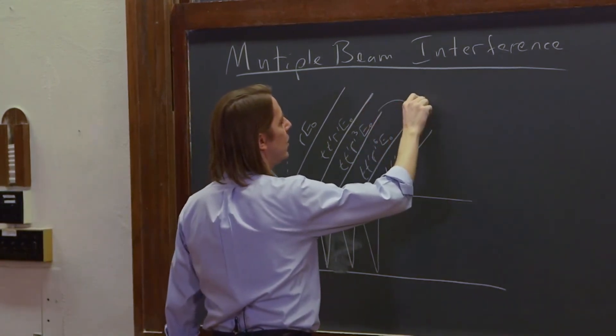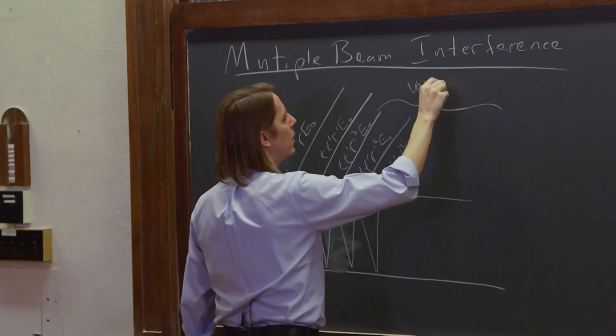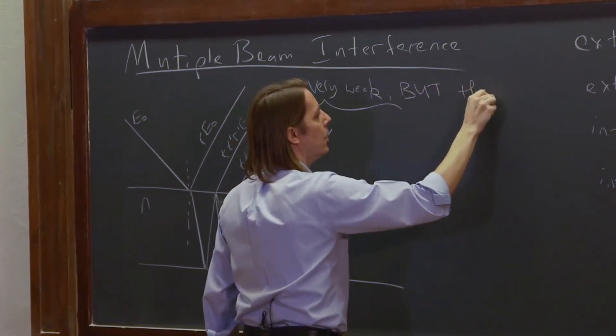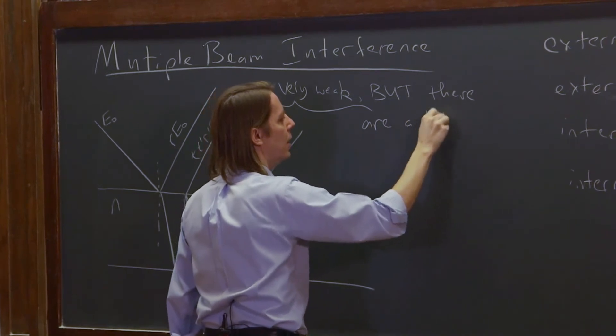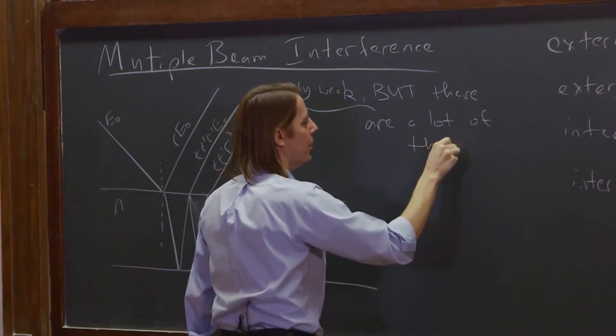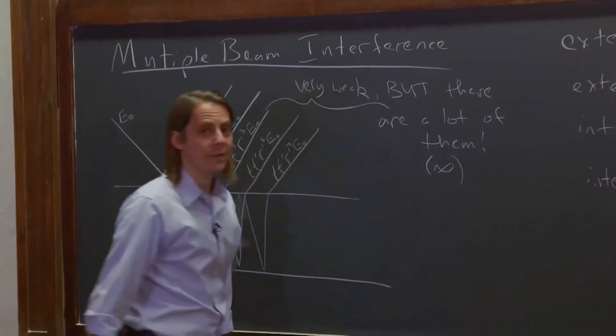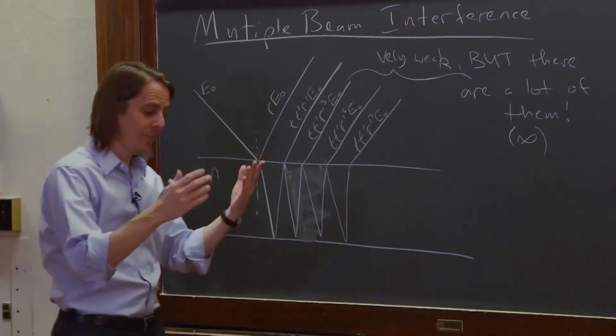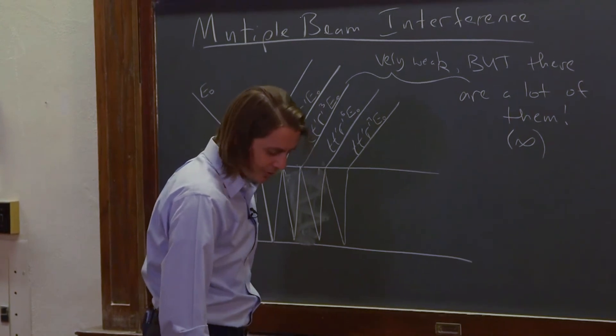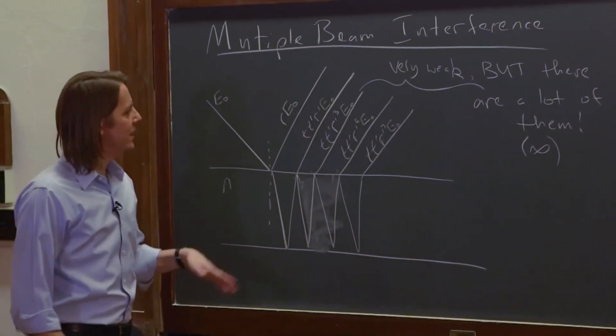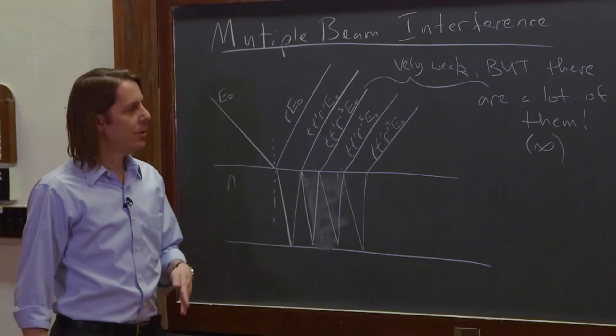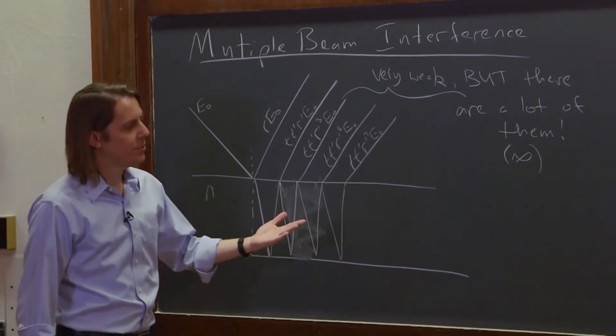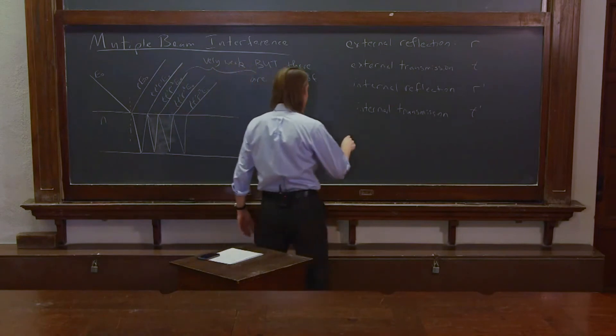So these are very weak. So we ignored them before, but there's a big but. There are a lot of them. Like infinity of them. Because they just keep going. So you have infinite terms. They're getting smaller and smaller. You know what that means. Sometimes it sums up to something significant. And sometimes it doesn't. So what we're going to do is actually keep up with all of them and add them together. But we also have to consider the fact that they could interfere. Maybe they'll interfere constructively. Maybe they'll interfere destructively. Who knows what they'll do. So we have to also keep up with the phase factors.